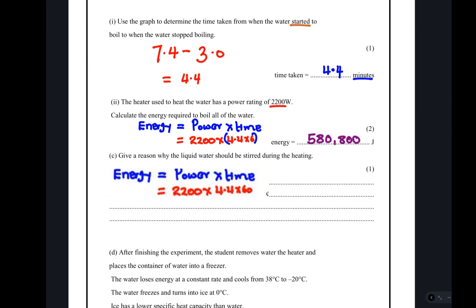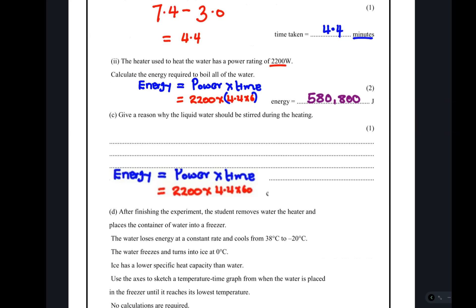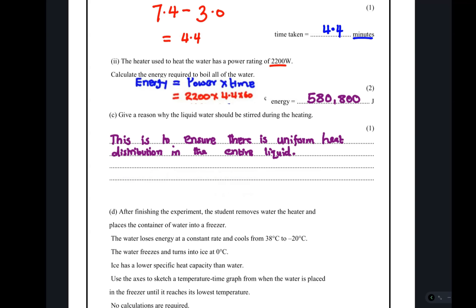Give the reason why the liquid water should be stirred during heating. We need heat distributed throughout the entire liquid so that when you measure the temperature it gives an accurate answer. In order to ensure heat has been uniformly distributed throughout the liquid, we stir it.